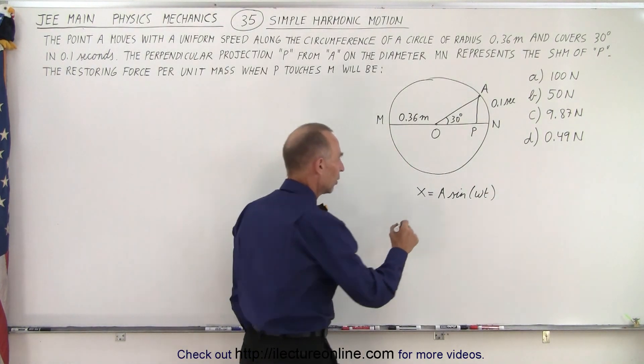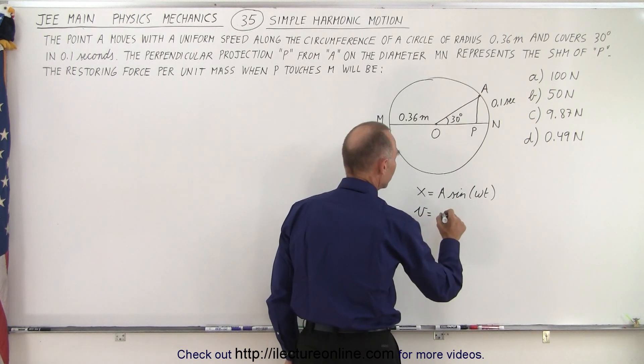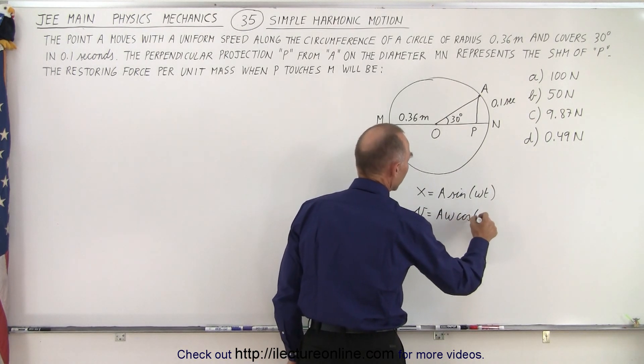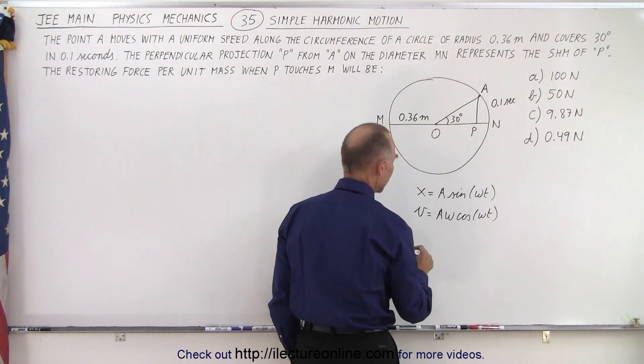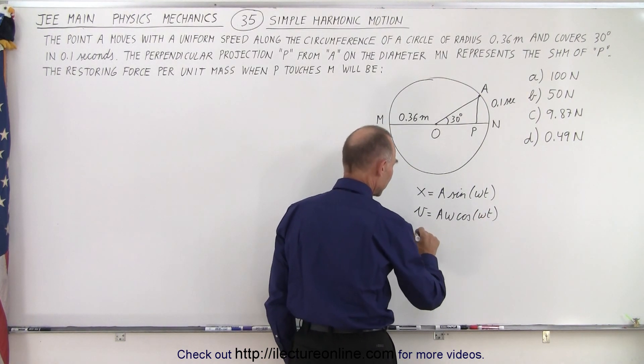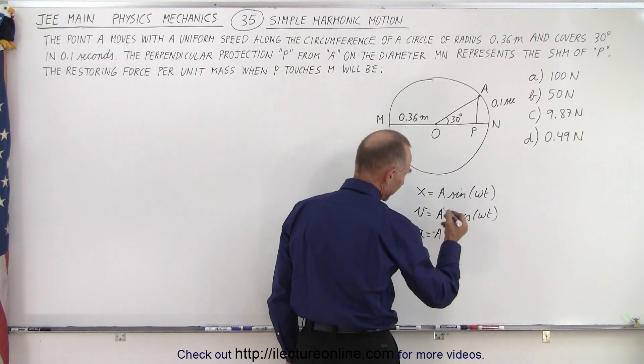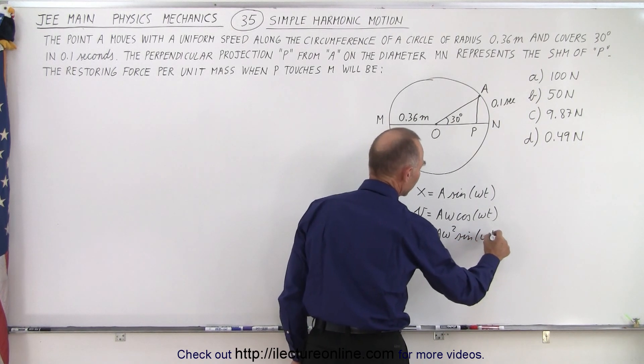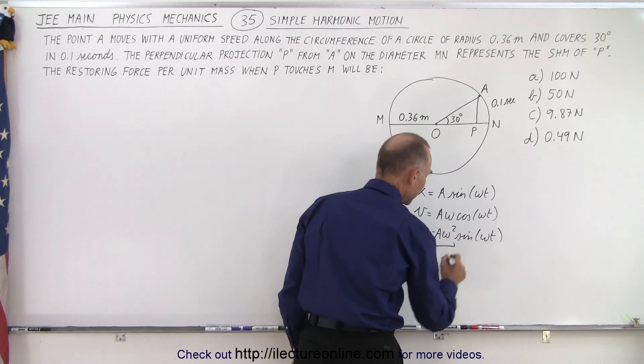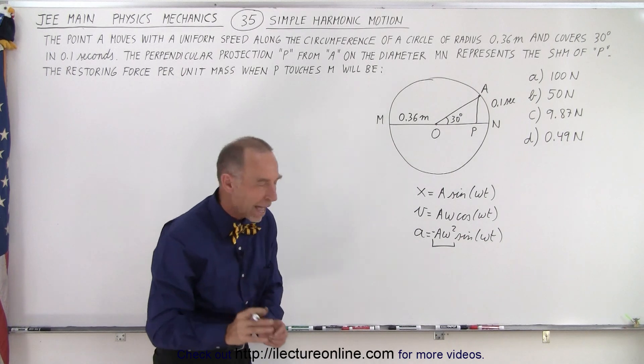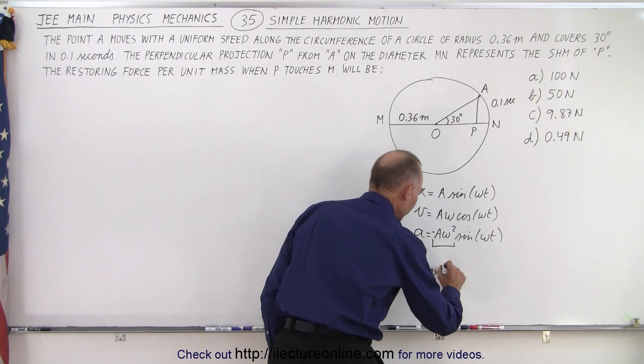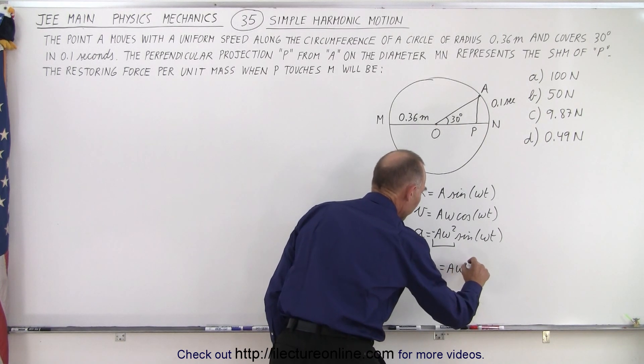Then if we take the derivative of that, we get the velocity is equal to A times Omega times the cosine of Omega T. And finally, when we take the derivative again, we get acceleration is equal to minus A times Omega squared times the sine of Omega T. And this part right here will be the maximum amplitude. So A max, the maximum amplitude of the acceleration, will be equal to A Omega squared.